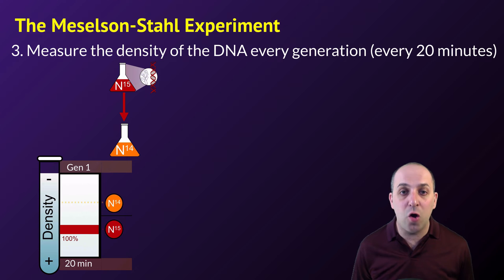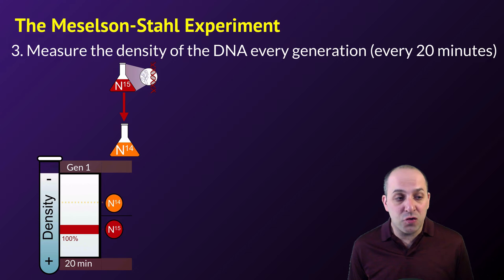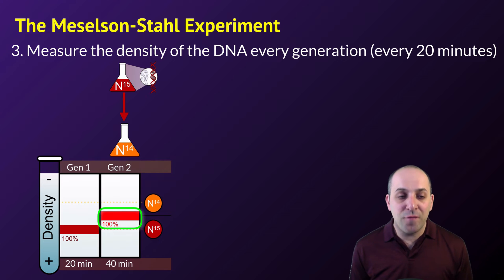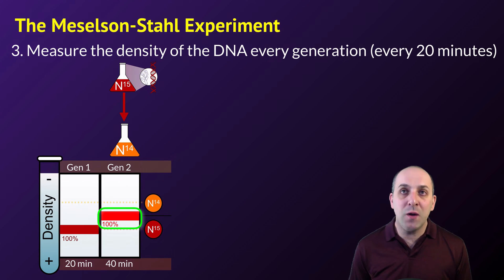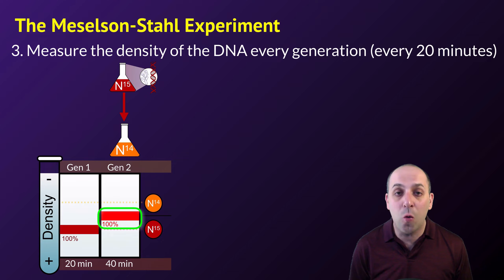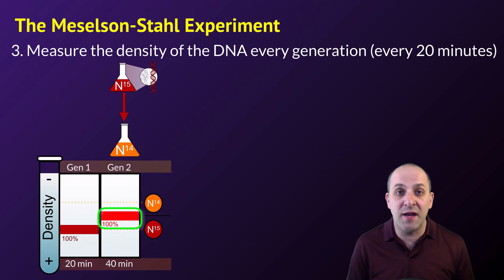In the first generation, all of the bacteria still had that heavy nitrogen-15 in their DNA, and so when they centrifuged this, you could see that the DNA was 100% towards the heavier end of the spectrum. They noticed that after the first replication event, all the DNA was now of an intermediate density — between a band expected if the DNA only contained light nitrogen and a band expected if it contained only heavy nitrogen. The density band representing DNA containing only heavy nitrogen had totally disappeared, and that experimental result refutes the conservative model of DNA replication.